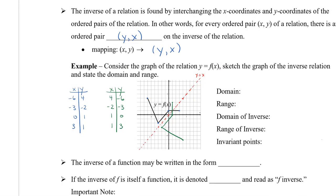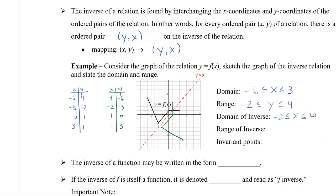Let's take a look at the domain and range. For the original graph, the domain goes from −6 all the way to positive 3. The range — the smallest y-value is −2, and the largest y-value goes all the way up to positive 4. Now for the inverse: the smallest x-value is −2 and the largest x-value is positive 4. The range of the inverse goes from −6 up to positive 3.